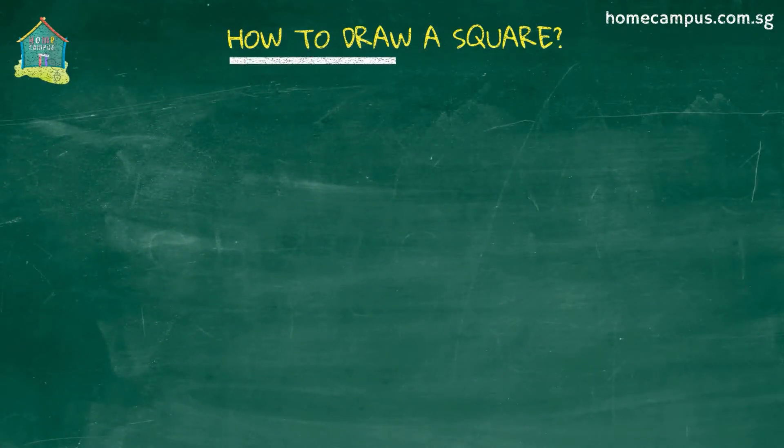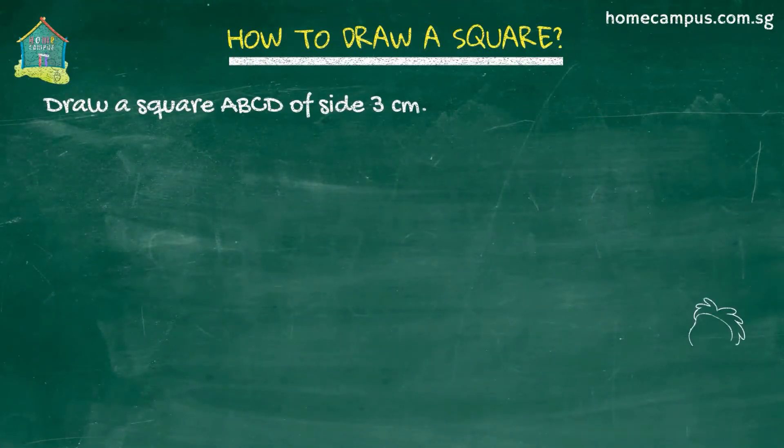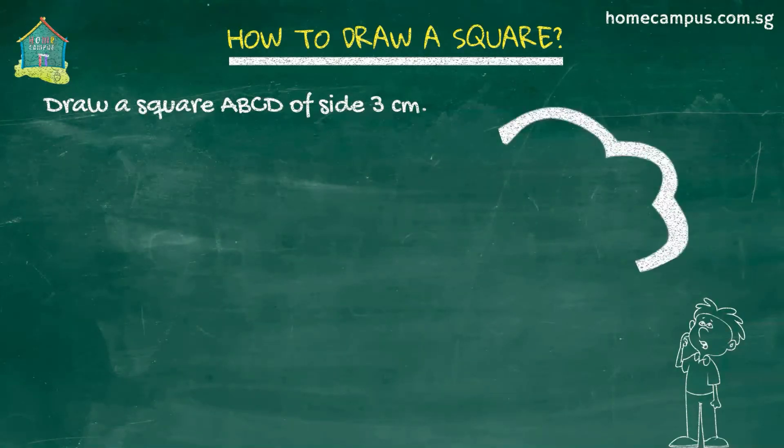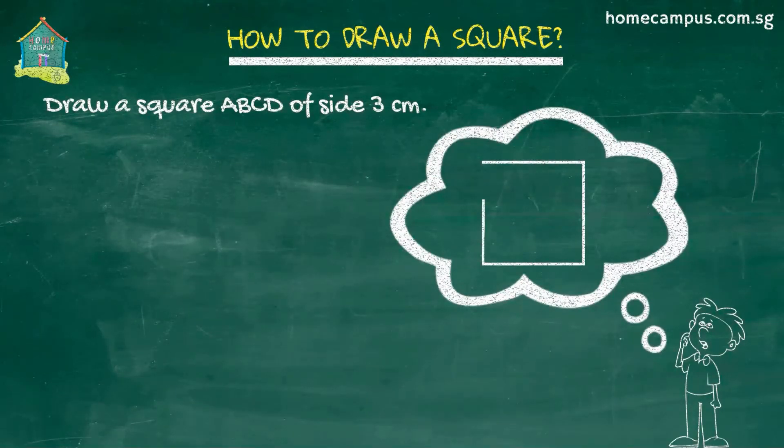Let's draw a square ABCD with sides of 3 centimeters. You will recall from a previous lesson that all sides of a square have the same length.